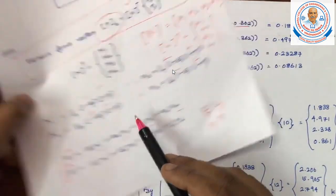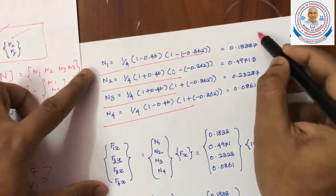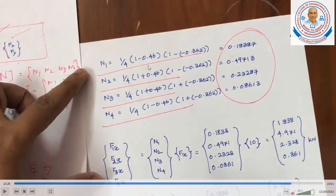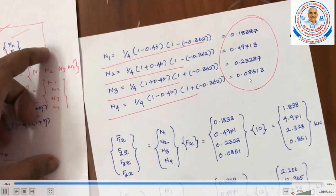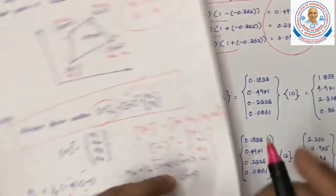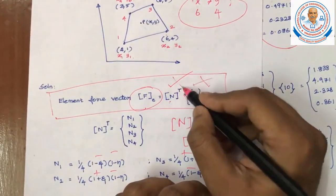If epsilon value and theta value, we have to substitute this in the shape functions formula. The N1 to N4 formulas are known. We will substitute. My 1 by 4, the epsilon value, theta value, here you will get the value of N1 up to N4. The summation of all the shape function values must be equal to 1. Once you get the answer, it must be equal to 1, then you have to calculate the element force vector.